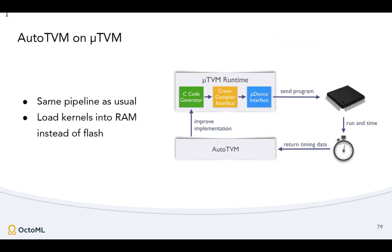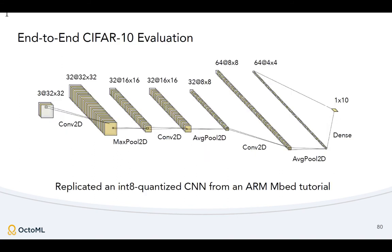Combining MicroTVM and AutoTVM is straightforward — you take the MicroTVM runtime and use it in the AutoTVM loop. It's the same pipeline, but we load kernels into RAM instead of flash to avoid wearing out flash write cycles and to be more equivalent to what you'd expect in a normal deployed application.